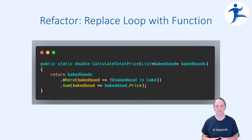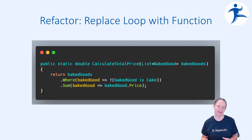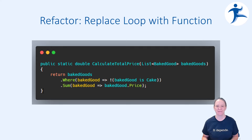So the for-each loop in this case is an anti-pattern. And if we even did it as a for loop, that would still be an anti-pattern, because we have tools out there that make it easier for us to write readable, maintainable code.